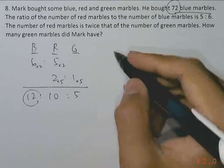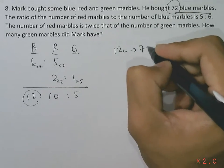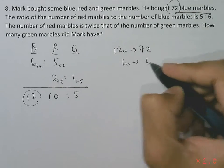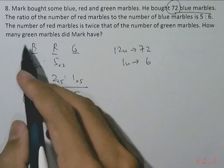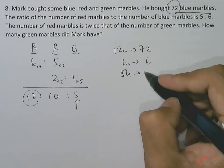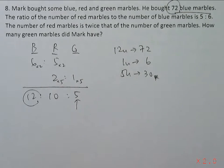Which corresponds to the 12 units here. So 12 units is 72, one unit would then be 72 divided by 12, which gives us 6. So how many green marbles did Mark have? He had 5 units, so that's 6 times 5, which gives our answer of 30 green marbles.